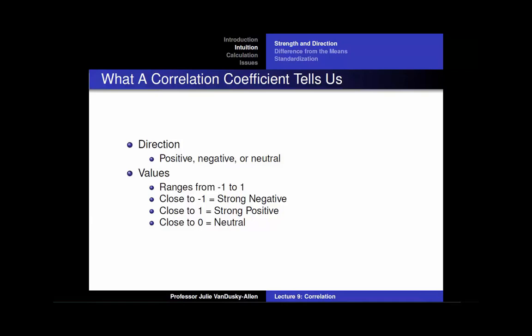Correlation coefficients close to 1 indicate a strong positive relationship between two variables. In other words, as one variable increases, the other variable tends to almost always increase as well. Correlation coefficients close to 0 indicate that as one variable increases, the other variable does not change.